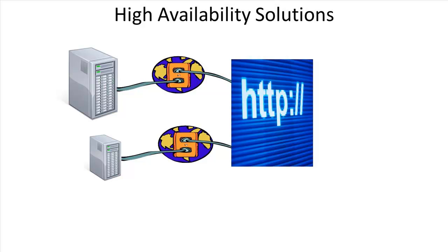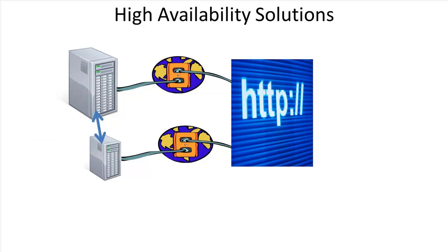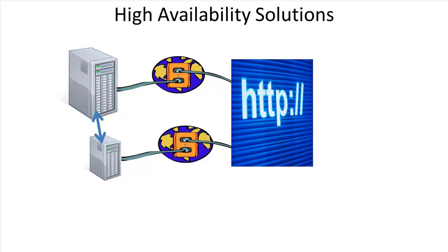When using high availability solutions, you always need at least one system ready to take over if the other fails. But do you want the system to detect a failover and switch automatically, or do you want that process done manually? If the failure happens at three in the morning, automatic failover is preferable. Also, do you want the data on the secondary server to be real-time, or can it have a slight delay? If there's a delay and the primary goes down, there could be data loss.